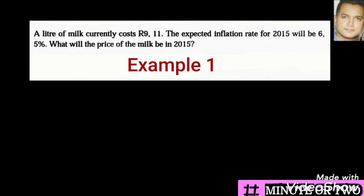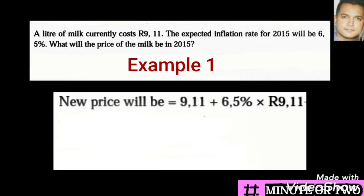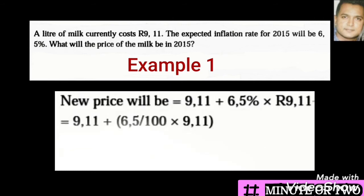That will give us our new amount. Our answer would look like this: R9.11 — we put the R9.11 at the beginning to remind ourselves that we need to add this on to what we work out. So we have R9.11 plus 6.5% of R9.11. That is the part we need to work out and then add it on to the R9.11.